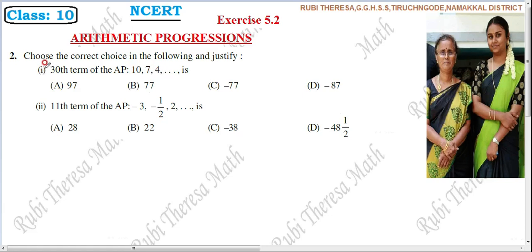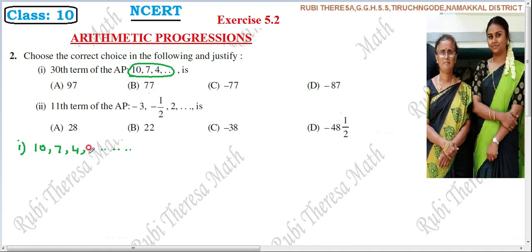First one: find the 30th term of the AP. We are given an AP sequence: 10, 7, 4, and it goes on. We need to find the 30th term, and it is given four options.